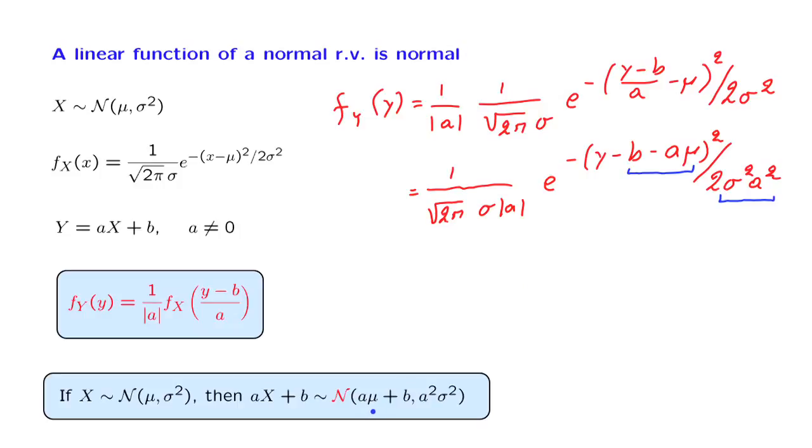The fact that this is the mean and this is the variance of y is not surprising. This is how means and variances behave when you form linear functions. The interesting part is that the random variable y is actually normal.